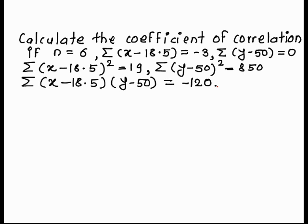Summation of x minus 18.5 squared is equal to 19, summation of y minus 50 squared is equal to 850, and summation of x minus 18.5 into y minus 50 is equal to minus 120.